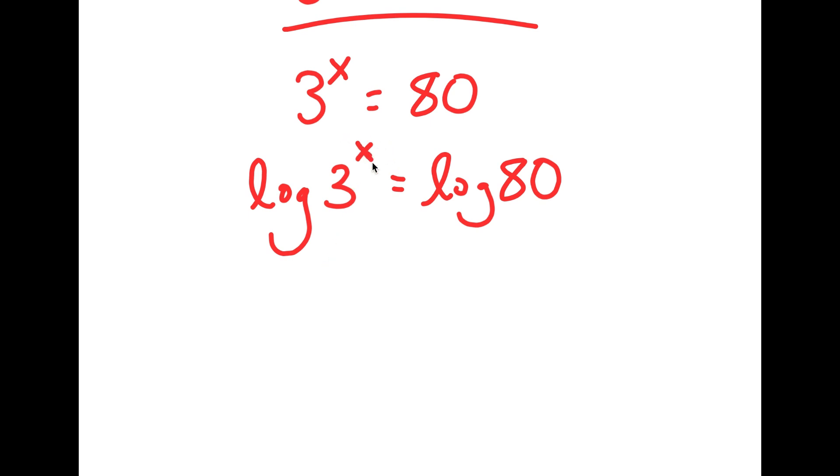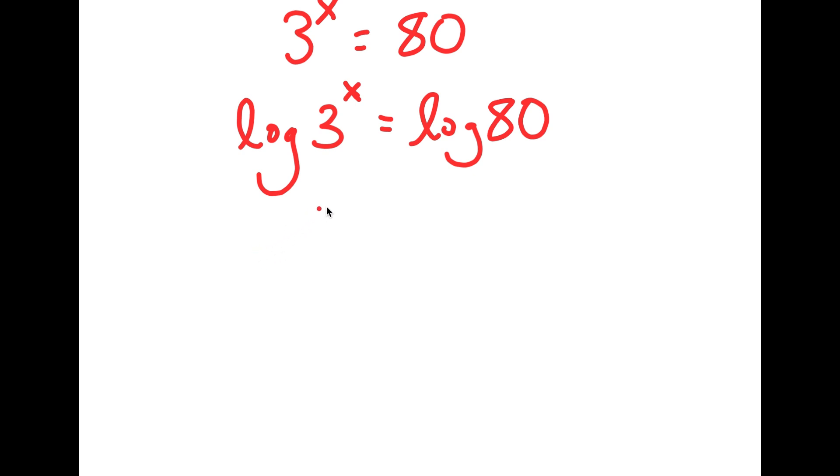Now we want to find the value of x, right? And to get x, it's hard to do it when it's an exponent form. So we want to find a way to bring x down to make it a real term. And to do that, there is an important property of logarithms. If there's something in the form log a to the power of b, I can move this b to the front. So this is going to equal b times log a.